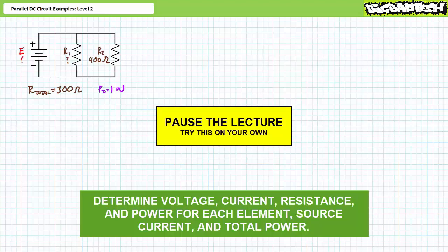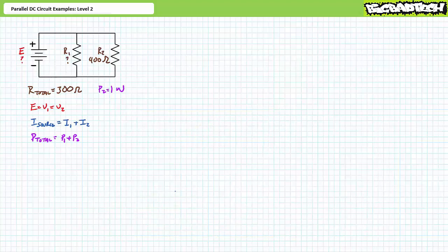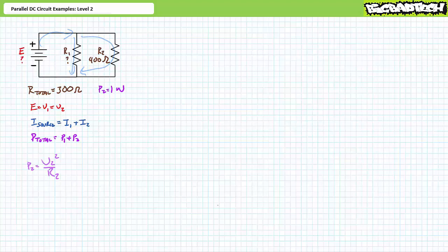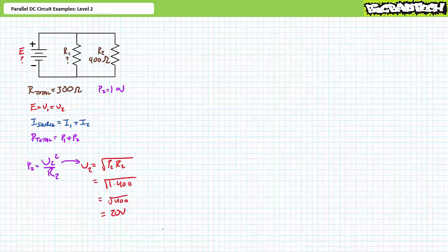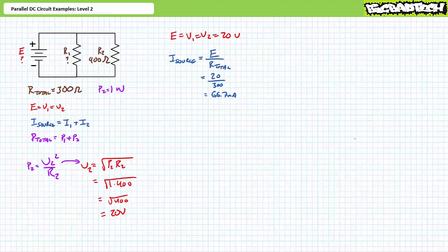Voltage across elements in parallel is the same; for this circuit, E equals V1 equals V2. Kirchhoff's current law: source current splits into two paths, so I_source equals I1 plus I2. Power in equals power out: P_total equals P1 plus P2. Since P2 equals V2 squared divided by R2, solving algebraically for V2 demonstrates V2 is 20 volts, and therefore E equals V1 equals V2 equals 20 volts. Source current equals supply voltage divided by total resistance, yielding 66.7 milliamps.